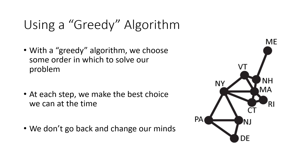We're going to solve this problem using what we call a greedy algorithm. Greedy algorithms exist for many different kinds of problems. In general, what a greedy algorithm does is put the problem in some sort of order — we're going to use alphabetical order here, but it really can be any order you want. Then in order, step by step, you make the best choice you can at that time, without going back and changing your choices to try to make the solution better.